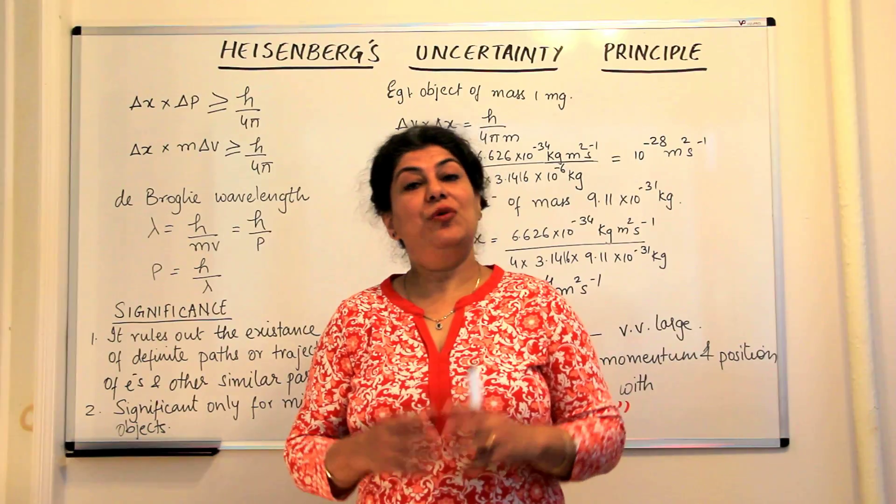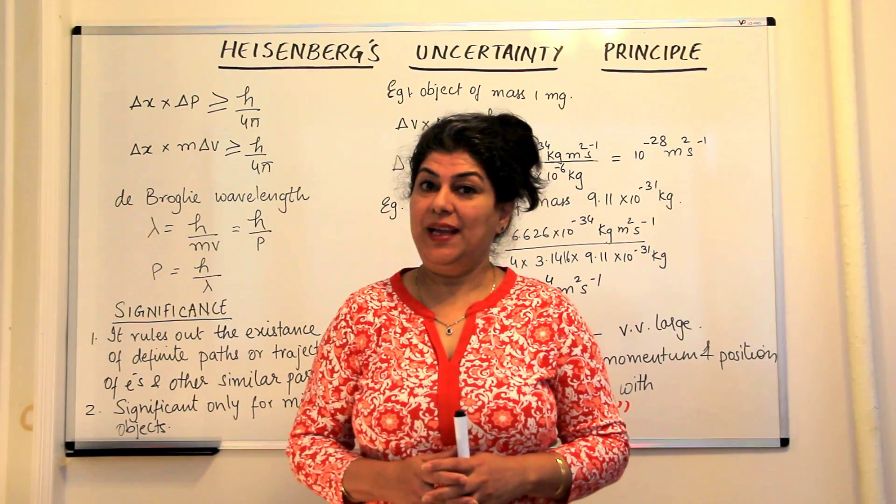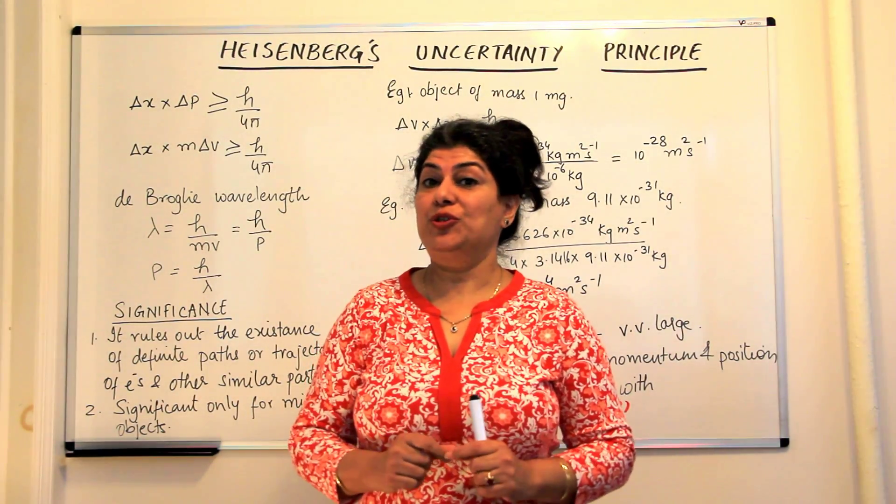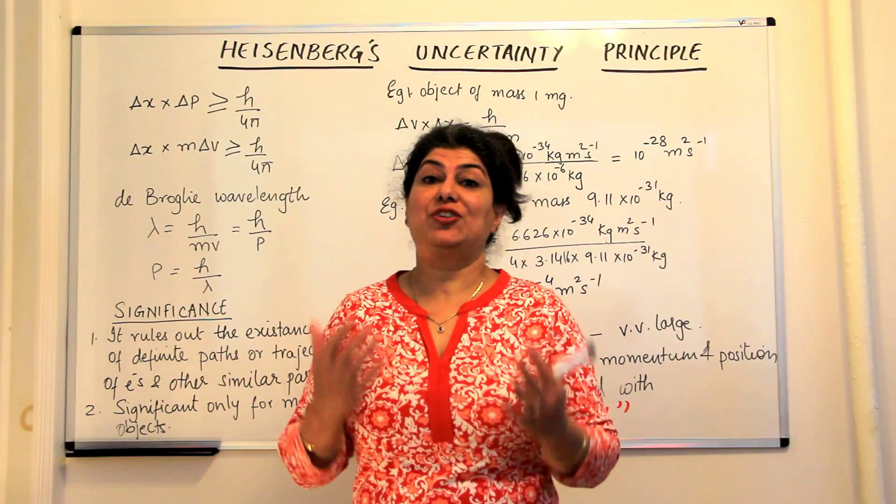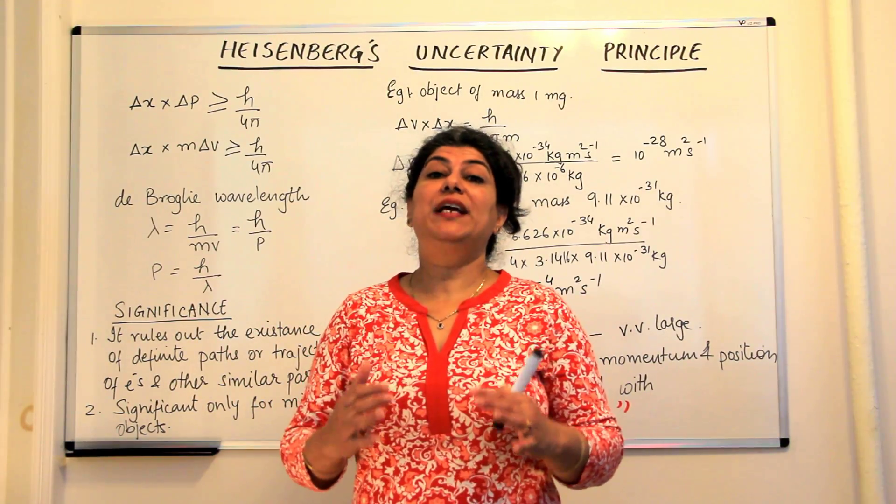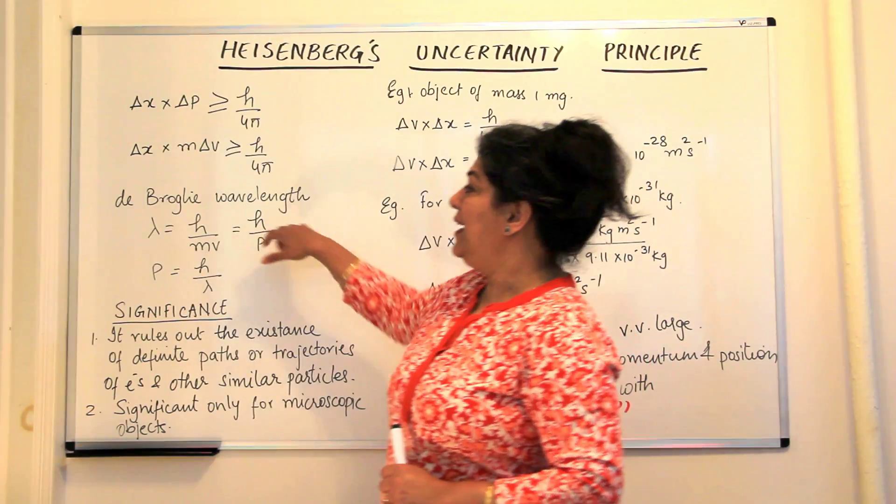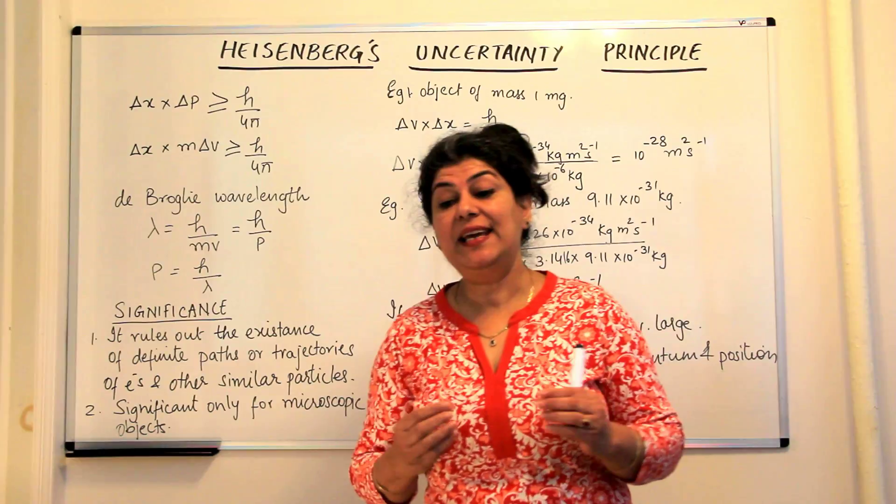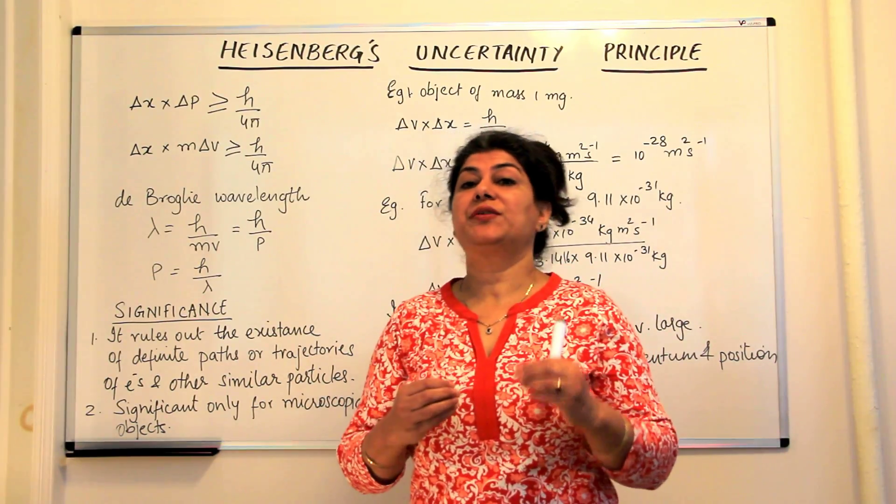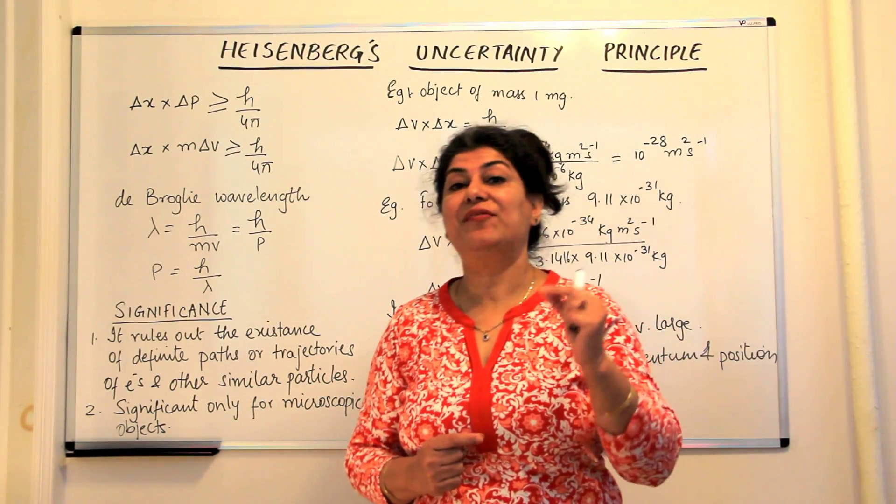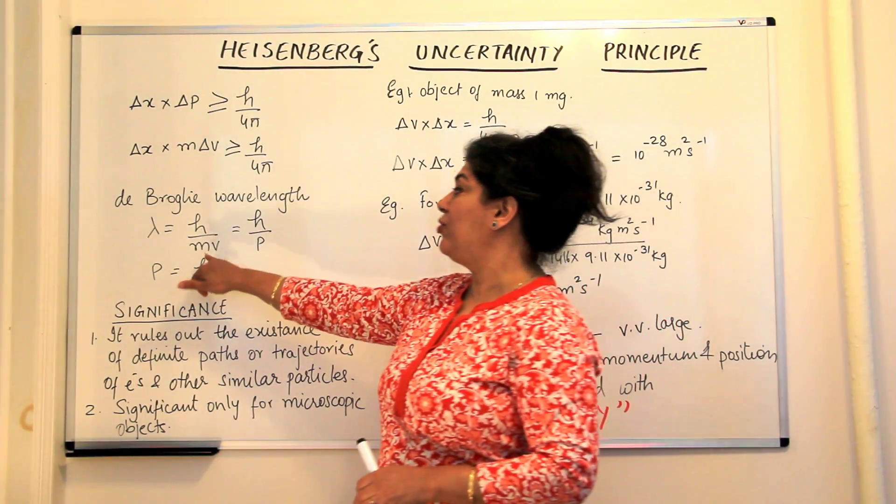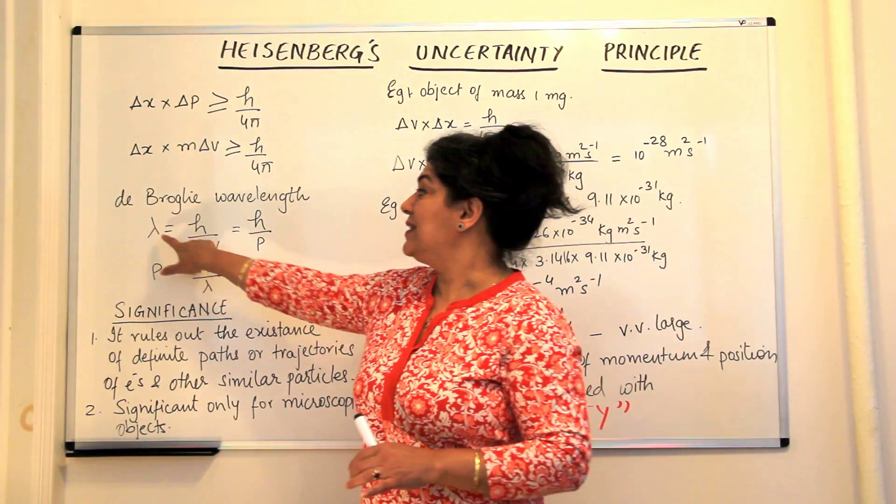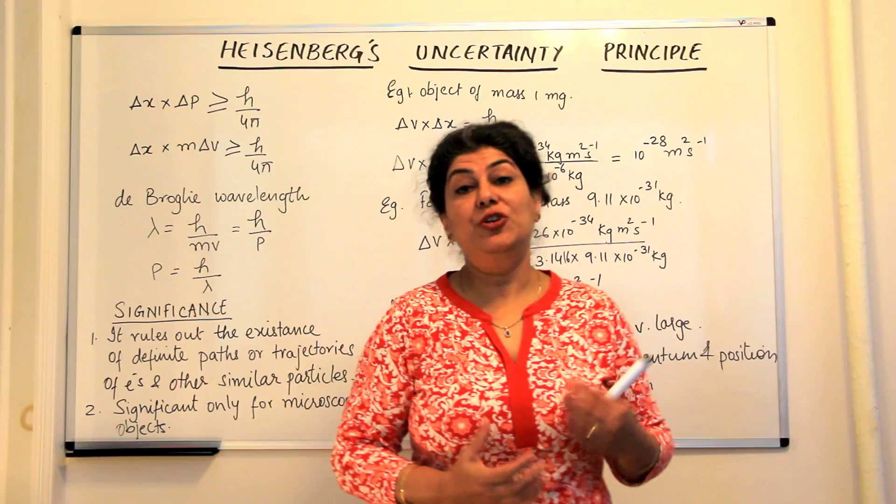In the previous videos, we discussed the structure of an atom and Bohr's atomic model. Then I told you about the dual nature of electron and how de Broglie gave the relationship between wavelength and momentum. He established that all matter has both particle-like and wave-like properties, but wave-like properties are not visible in macroscopic objects due to the mass in the denominator, making the wavelength so small it's not noticeable.